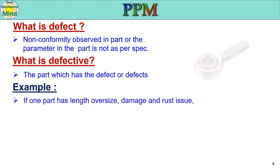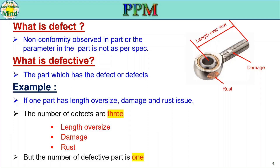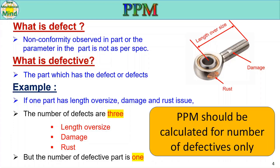For example, if one part has length oversize, damage, and rust issues, the number of defects are three — length oversize, damage, and rust — but the number of defective parts is one. PPM should be calculated for number of defectives only, not for defects. If PPM is calculated for number of defects, that is not the correct method and the PPM value will be higher.